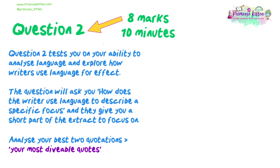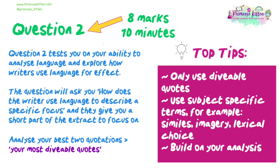Question Two is worth eight marks, so spend around ten minutes on it. It tests your ability to analyse language and explore how writers use language for effect. You need to identify and explain the effect of specific linguistic choices — for example, the writer uses the simile to show. The question asks how the writer uses language to describe a specific focus, and gives you a short part of the extract to focus on. Analyse your two best — your most 'divable' — quotations: ones you can pick apart and make several points of analysis about. Use subject-specific terminology such as similes, imagery, and lexical choice. Build on your analysis, zooming in on specific words and commenting on their individual effect — examiners love seeing analysis that progresses and levels up.